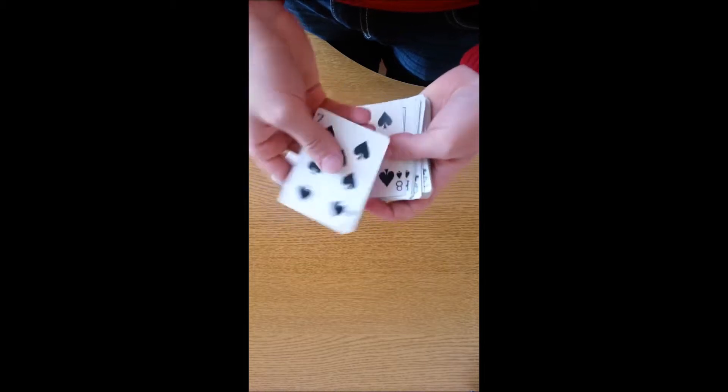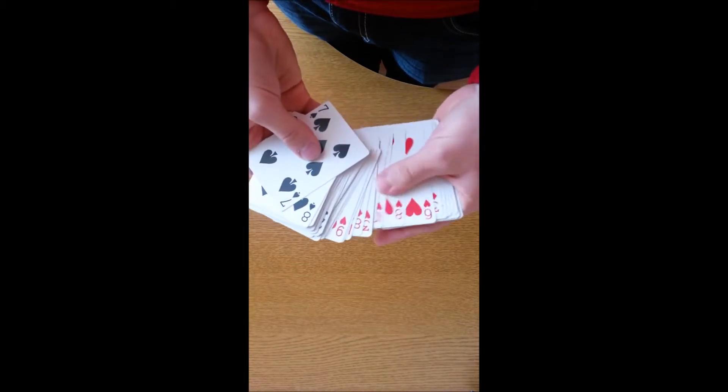You take the same Seven of Spades from this pile and put it somewhere in the middle of the red pile.